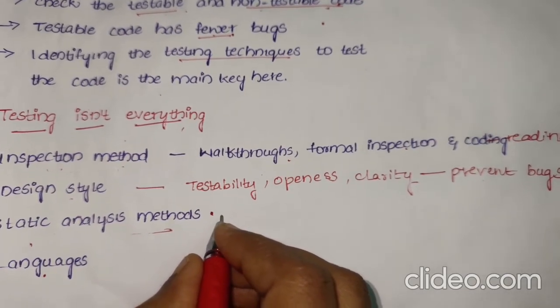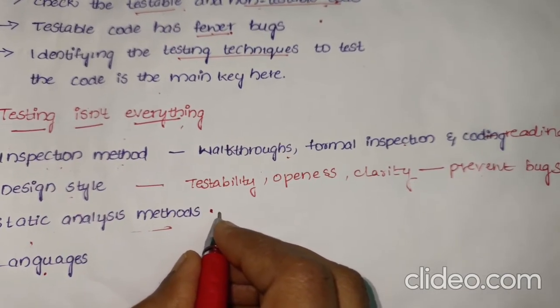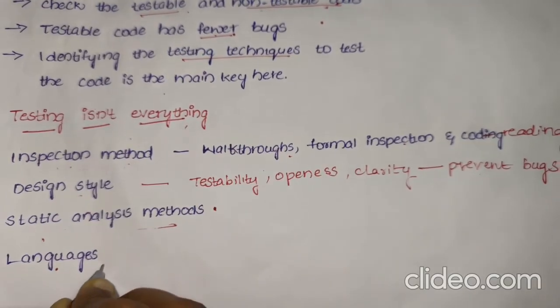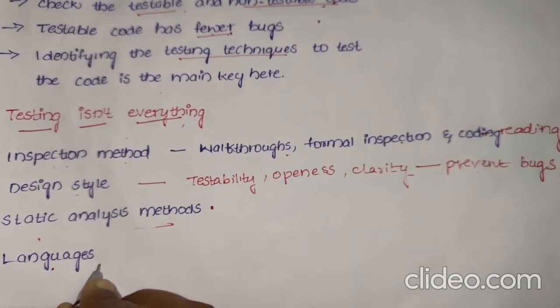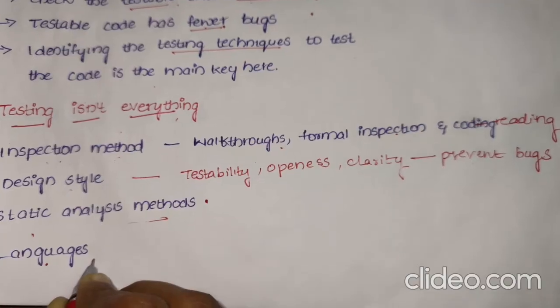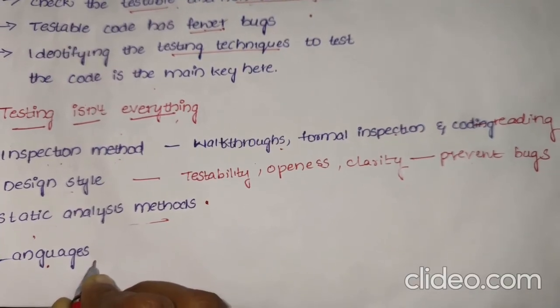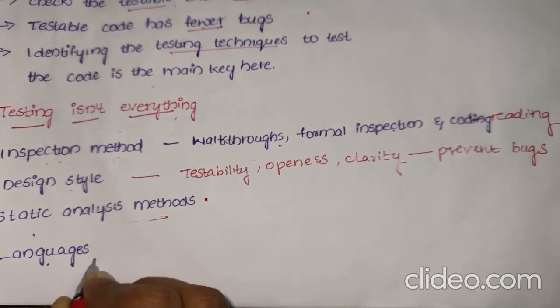Languages: the source languages can help reduce certain kinds of bugs. Programmers find new bugs and many bugs while using new languages.